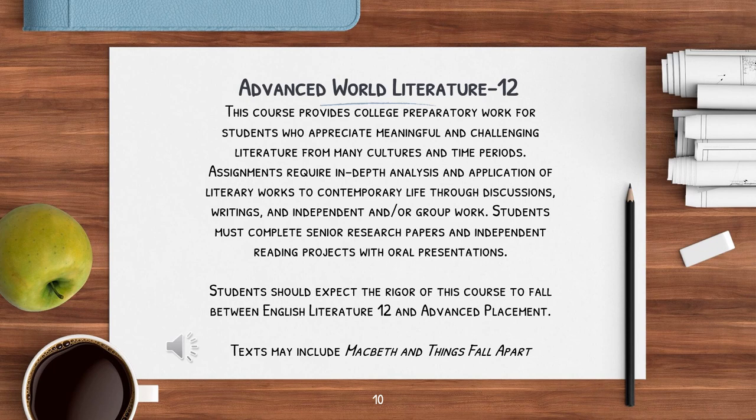Advanced World Literature, Grade 12: This course provides college preparatory work for students who appreciate meaningful and challenging literature from many cultures and time periods. Assignments require in-depth analysis and application of literary works to contemporary life through discussions, writing, and independent and/or group work. Students must complete senior research papers and independent reading projects with oral presentations. Students should expect the rigor of this course to fall between that of English Literature 12 and Advanced Placement. Texts include Macbeth and Things Fall Apart.